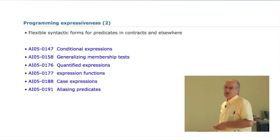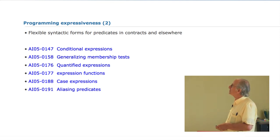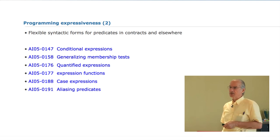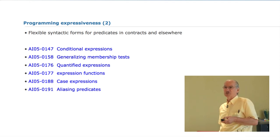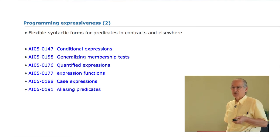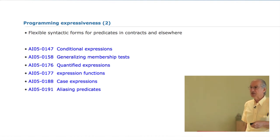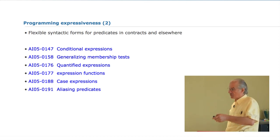A bunch of smaller things are worth mentioning: conditional expressions, membership tests, quantified expressions, expression functions, case expressions, and aliasing predicates. All of these are small syntactic forms that seem to be extremely useful, easy to describe, familiar from other languages, and in many cases will help a lot in writing contracts — since contracts will typically involve interesting Boolean expressions, and you want greater facility for writing those.